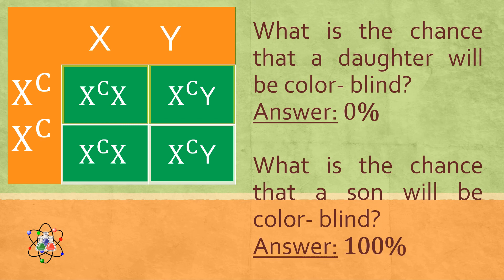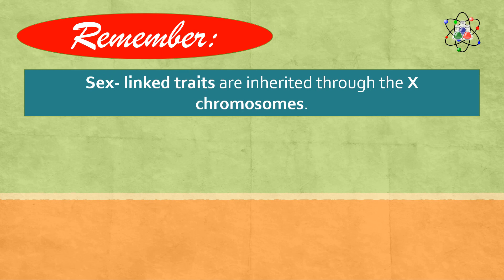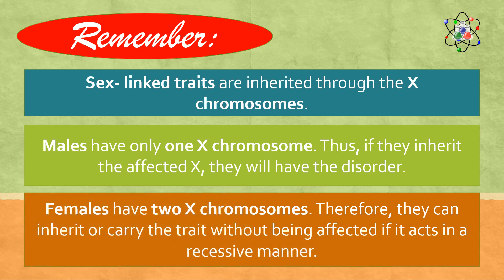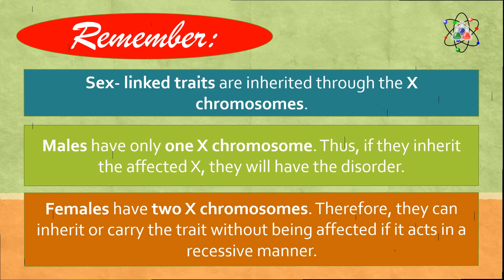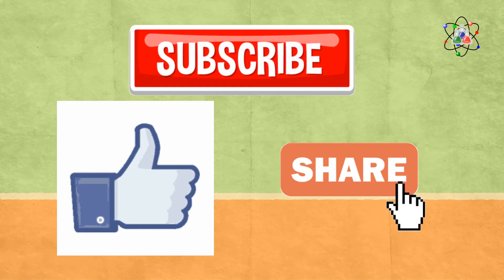So, let us summarize. Sex-linked traits are inherited through the X chromosomes. Males have only one X chromosome; therefore, if they inherit the affected X, they will have the disorder. Females have two X chromosomes; therefore, they can inherit or carry the trait without being affected if it acts in a recessive manner. And that's it with our lesson for today. Hope you learned something in this video. If you did, please consider subscribing, give us a like, and share this to others. See you on our next video!